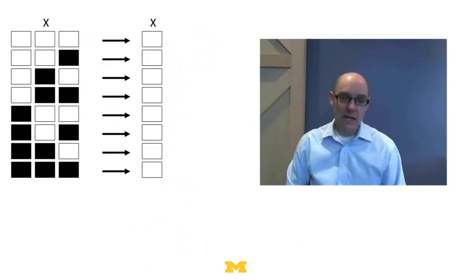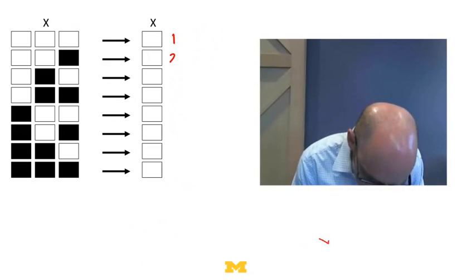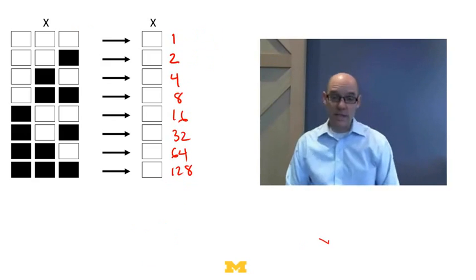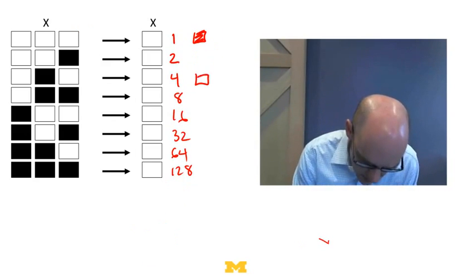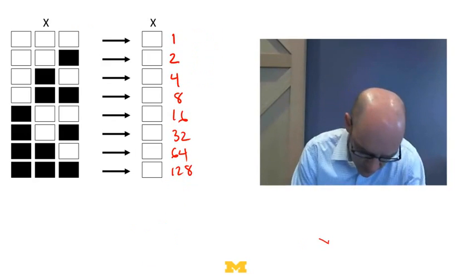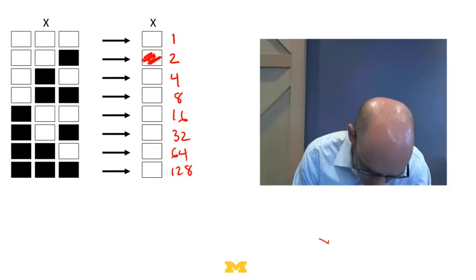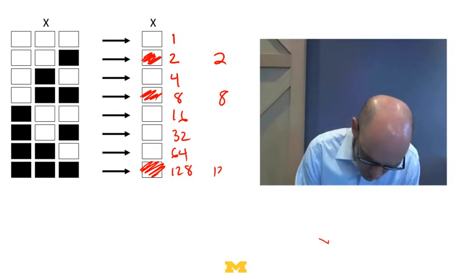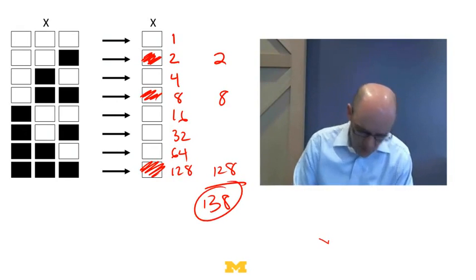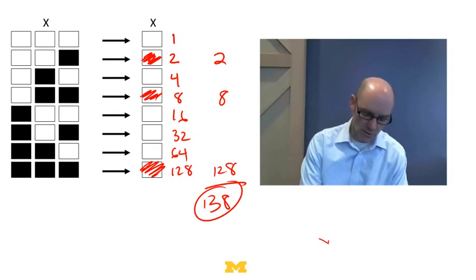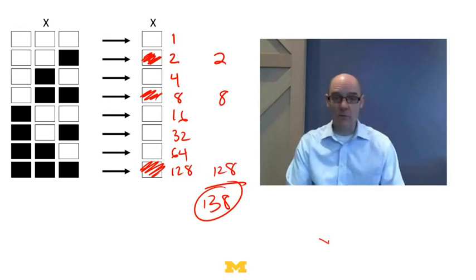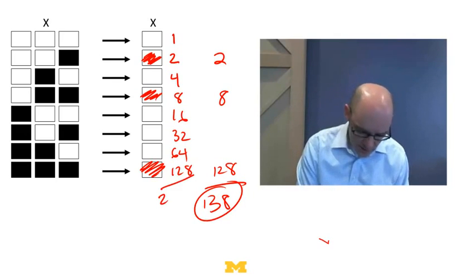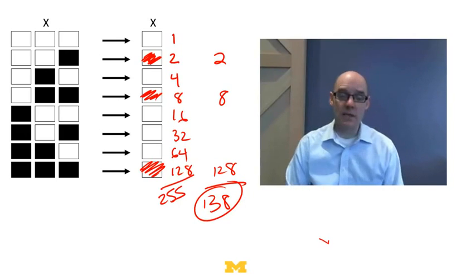Wolfram comes up with an ingenious way of numbering the rules. He assigns these states the numbers 1, 2, 4, 8, 16, 32, 64, 128. Then if a particular outcome is 'on,' you include that number in your sum. For example, if states 2, 8, and 128 are on, we add those up to get 138 — so that's rule 138. This gives every rule a unique number between zero and 255. The rule where everything goes off is rule zero; the rule where everything goes on sums to 255.